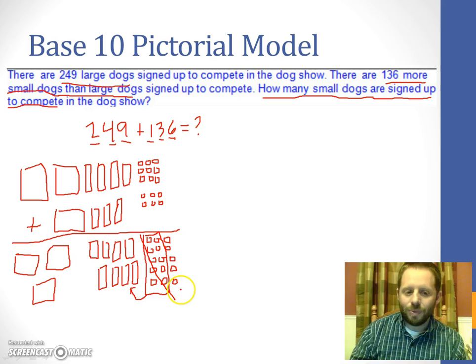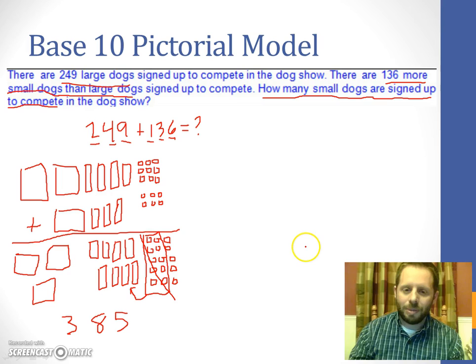In the tens, we only have eight total, so we're okay there. And in the 100s, we only had three flats, so we're okay there. So our final answer here would be 385. So there'd be 385 small dogs competing in the dog show.